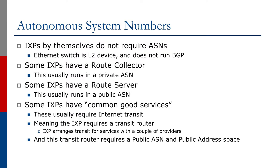As for autonomous system numbers, Exchange Points by themselves do not require ASNs. An Ethernet switch is a Layer 2 device and doesn't run BGP. However, some Exchange Points have a device called a Route Collector, which usually runs in a private AS. Some Exchange Points also have a Route Server, and this usually runs in a public AS.